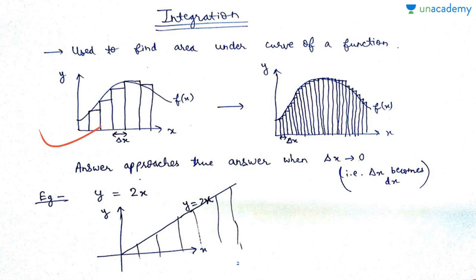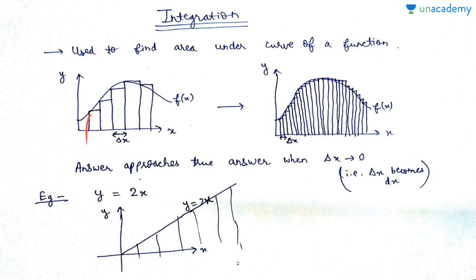One method to find the area is to draw rectangles — bar-shaped figures — underneath this curve. You find the area of each rectangle, which is very easy, and then add them all up. But as you can see, the sum of the areas of all these rectangles will not give you the true value, because some portions are missed and some extra portions are included.